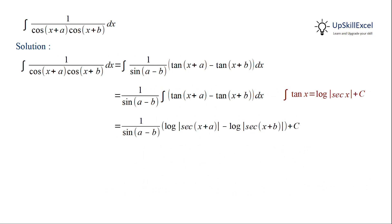we get 1 over sin(a-b) log of absolute of sec(x+a) minus log of absolute of sec(x+b). As we have two log terms in difference, we can write it as a log of division. So we get 1 over sin(a-b) log of absolute of sec(x+a) over sec(x+b) plus c. This can also be written as 1 over sin(a-b) log of absolute of cos(x+b) over cos(x+a) plus c.